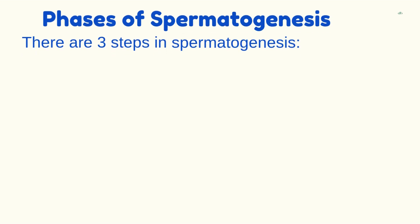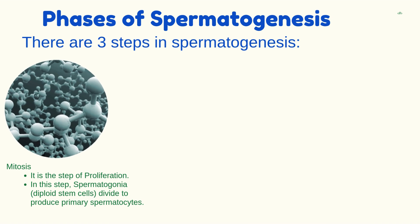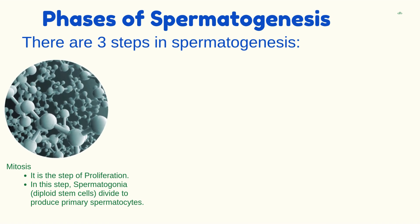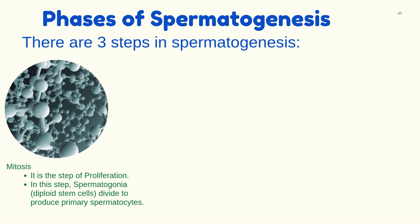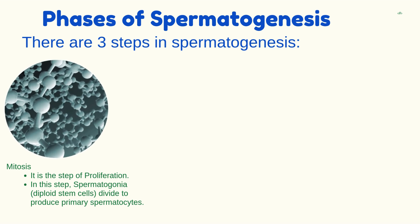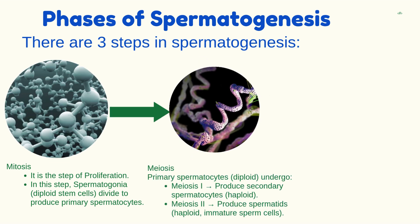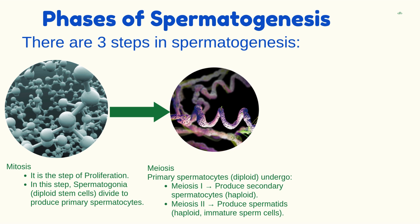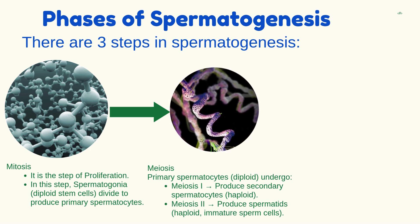There are three steps in spermatogenesis. The first step is mitosis, the step of proliferation. In this step, spermatogonia — diploid stem cells — divide to produce primary spermatocytes. The second step is meiosis, in which primary spermatocytes (diploid) undergo meiosis one to produce secondary spermatocytes that are haploid.